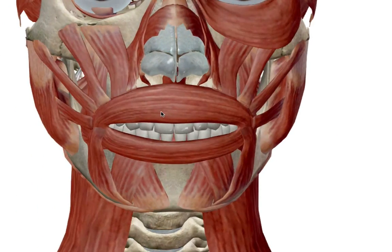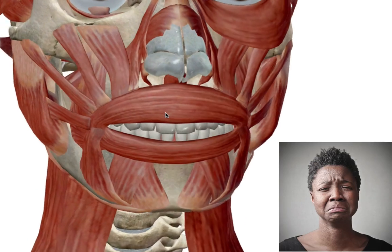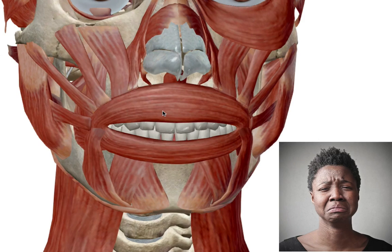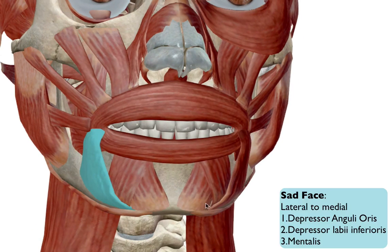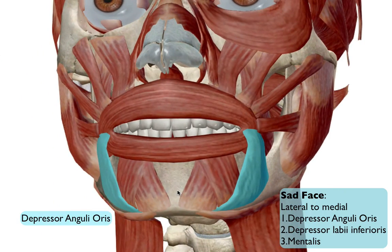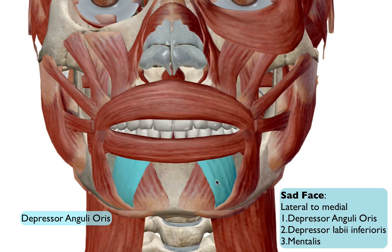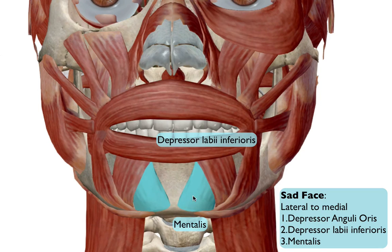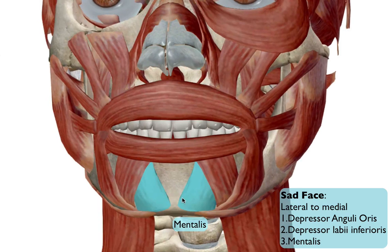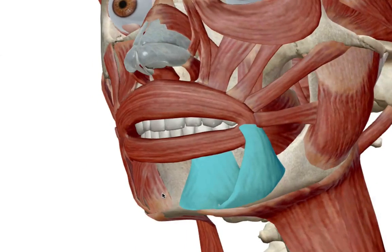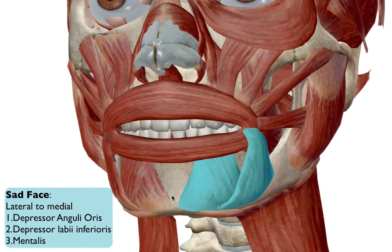Moving from smiling and laughing, let's take a sadder tone and look at the muscles responsible for our sad or frowning face. We're going to look at three muscles, starting laterally and moving medially. The first is your depressor anguli oris, which pulls down on the angle of the lip. Medial to that is your depressor labii inferioris. And if you've ever had your lower lip or chin quiver — like when a little kid cries — that's your mentalis.